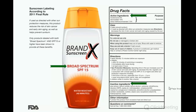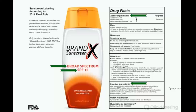If a sunscreen meets the UVA criteria, the FDA allows a 'broad spectrum' label. So look for broad spectrum first, then SPF — the American Academy of Dermatology recommends SPF 30; you don't need to go to 50 or 100. The broad spectrum ingredients are what's really important. You may also want to look for water resistance. Active ingredients are broadly divided into two forms: mineral (physical) sunscreens and chemical sunscreens.